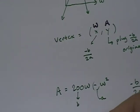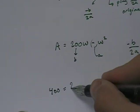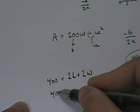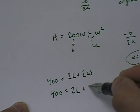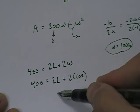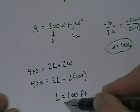And I say, okay, 400 equals 2L plus 2W. Well, 400 equals 2L plus 2 times 100. We found W was 100 feet. Solve for L and guess what we get? L equals 100 feet.